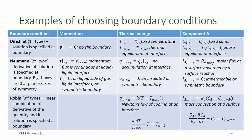Robin conditions — known combinations of a quantity and its derivative — often arise in thermal energy and component balances. For example, if we invoke Newton's law of cooling, the heat flux is a linear function of the temperature. The heat flux is given by the derivative of the temperature, and therefore we can combine a known value of the temperature and its derivative to arrive at a Robin condition.